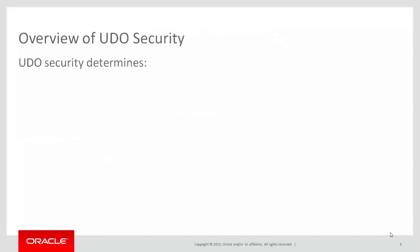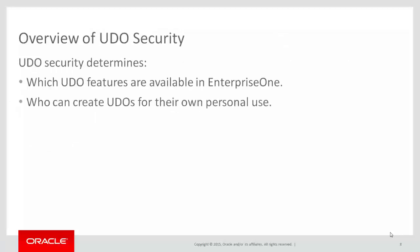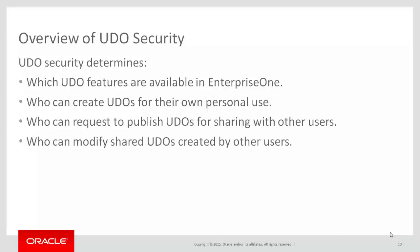UDO security determines which UDO features are available in Enterprise One, who can create UDOs for their own personal use, who can request to publish UDOs for sharing with other users, who can modify shared UDOs created by other users, and who can view or work with shared UDOs. By default, UDO features — the design panels that users use to create user-defined objects — are not available in Enterprise One until you activate them using UDO feature security.